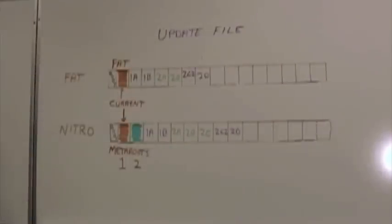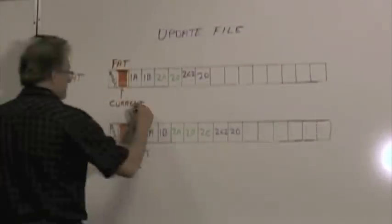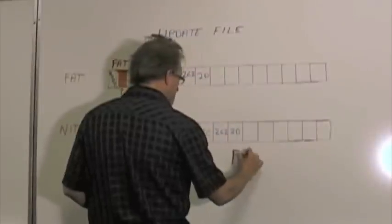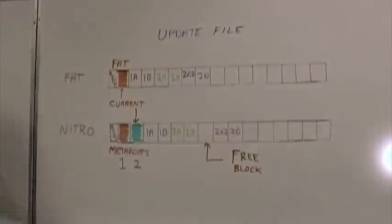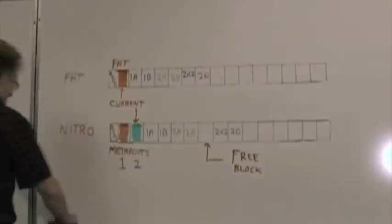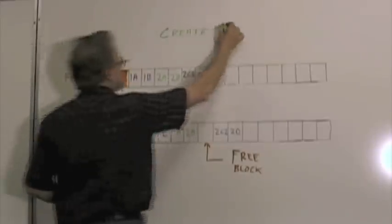When updating on Reliance Nitro, a copy of that block is made and after a successful transaction point that original block becomes a free block. While this appears to cause fragmentation, on flash media the blocks are wear leveled and therefore non-contiguous.